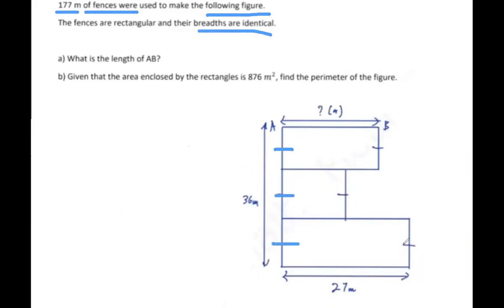Since the ones here are actually the same, we can find out what's the breadth of each and every single one of them. So the breadth will be 36 divided by 3 equals to 12.